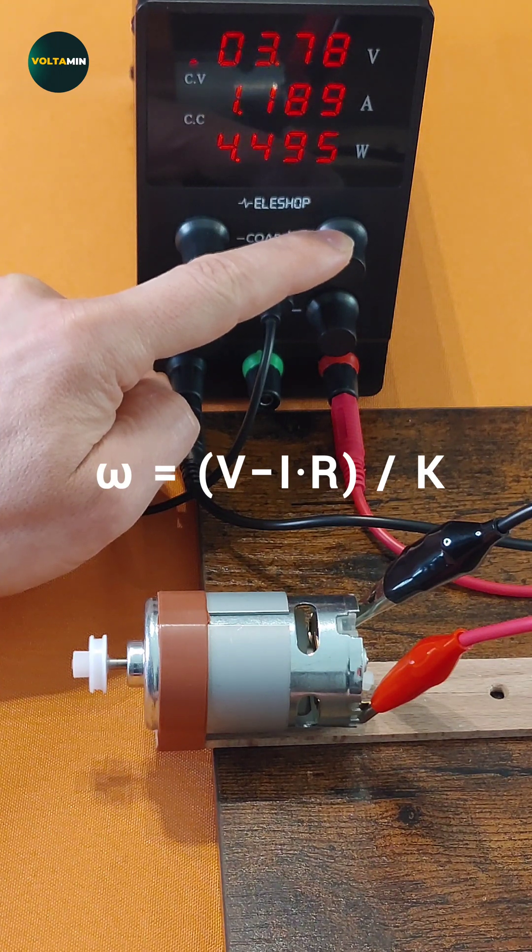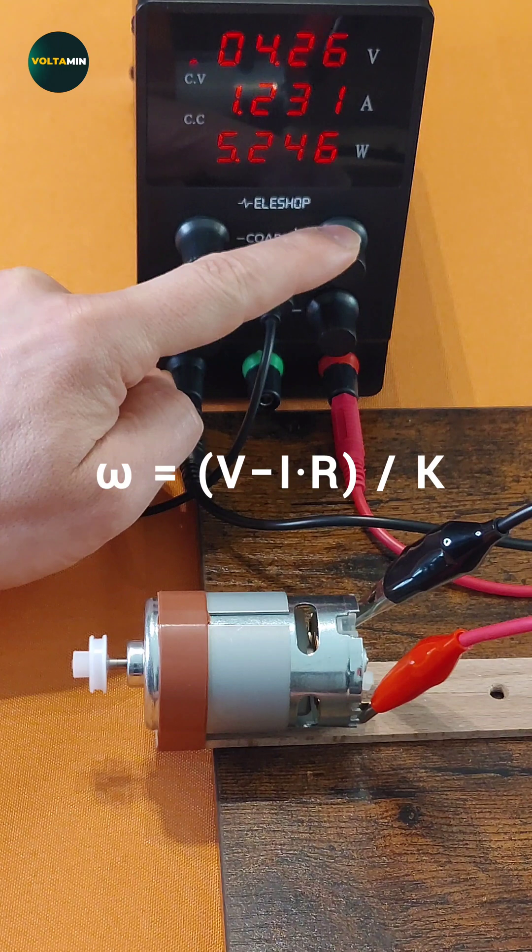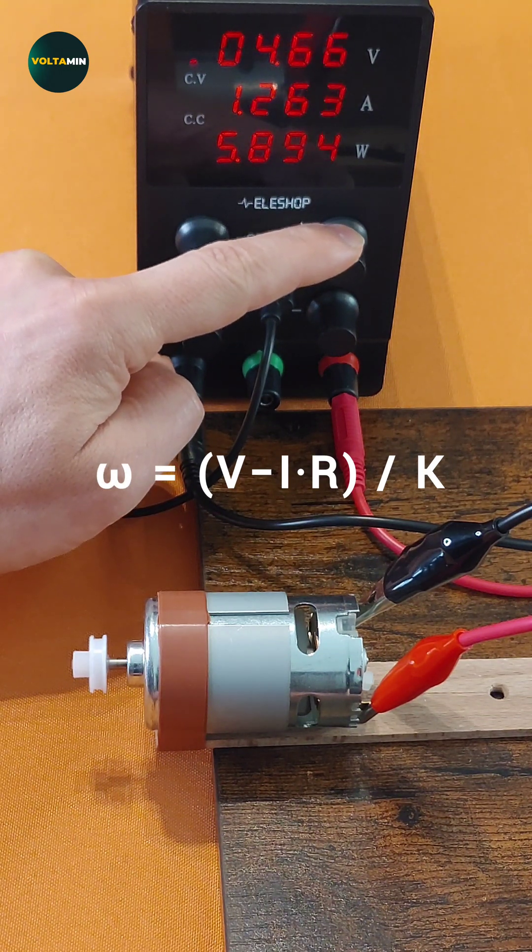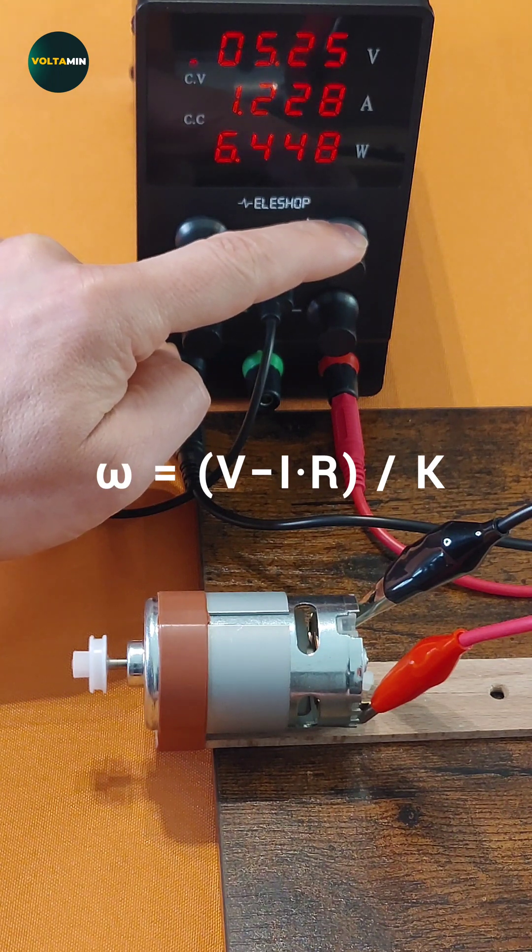Where omega is the angular velocity in radians per second. V is the applied voltage in volts. I is the armature current in amperes. R is the armature resistance in ohms. K is the back EMF constant in volt seconds per radian.